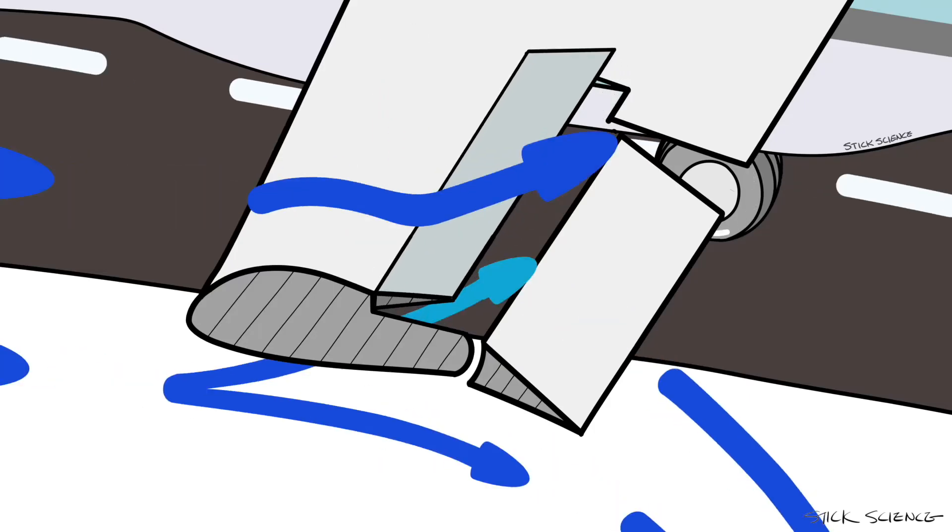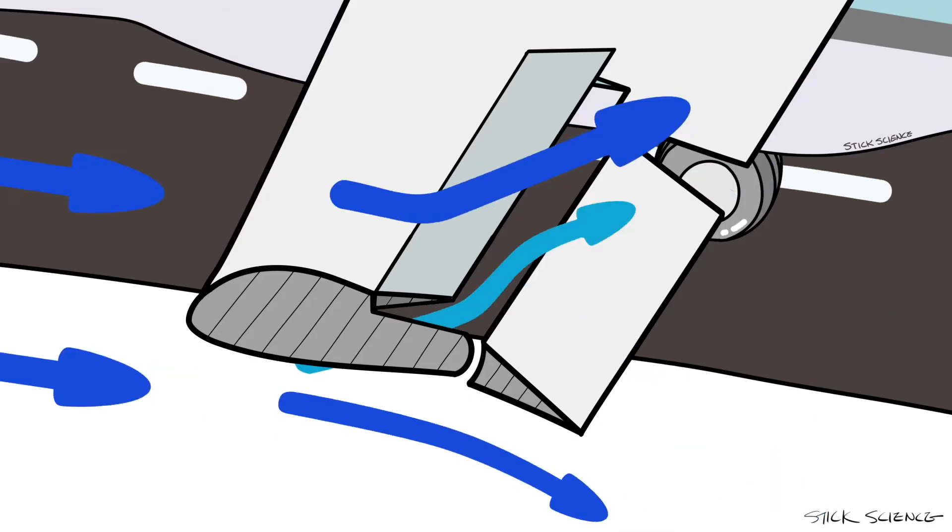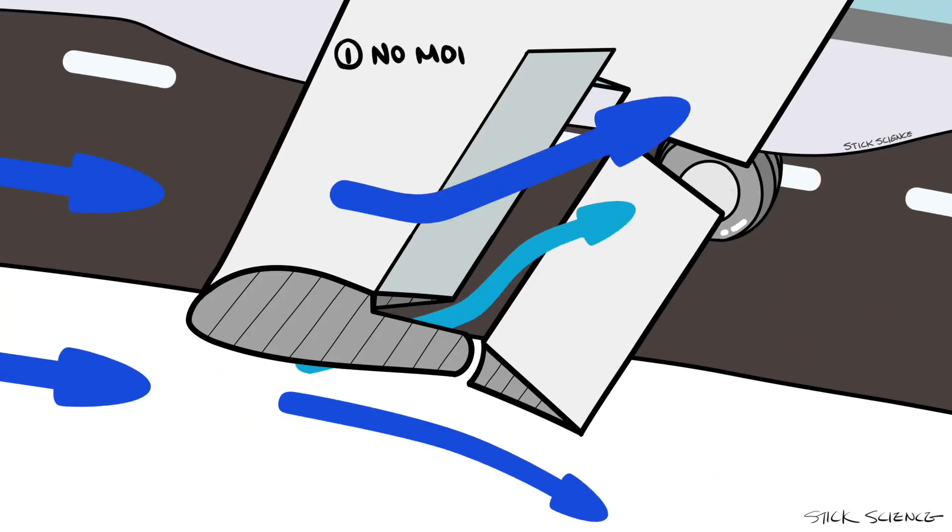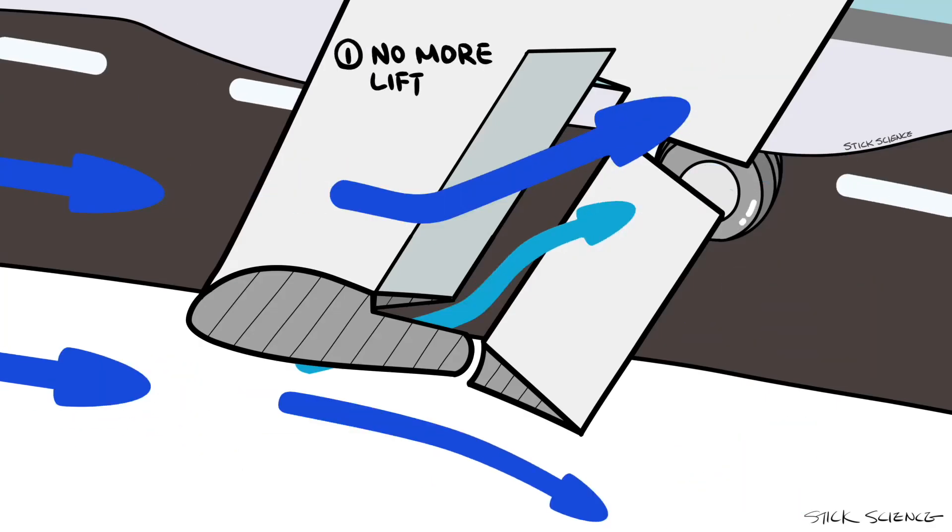When the plane lands, the spoilers will elevate in order to spoil the airflow over the wings. This has three major effects. One, it interrupts the lift that's usually created by the wings.